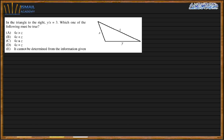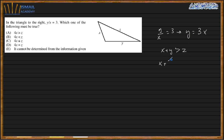Next question. In the triangle, y/x = 3, so y = 3x. Using the triangle inequality, x + y > z. Substituting y = 3x: x + 3x > z, so 4x > z. The answer is A.